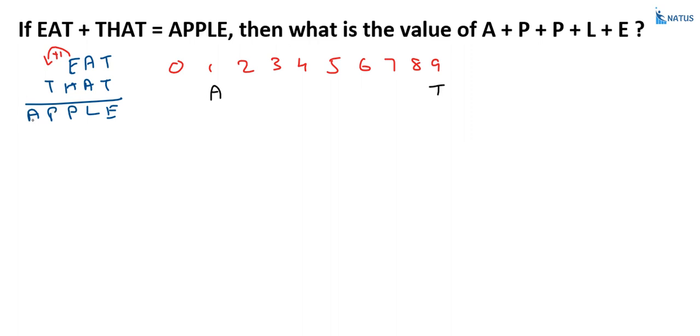So, since A is already equal to 1, the value of P is equal to 0. So, 0 is allocated to P.